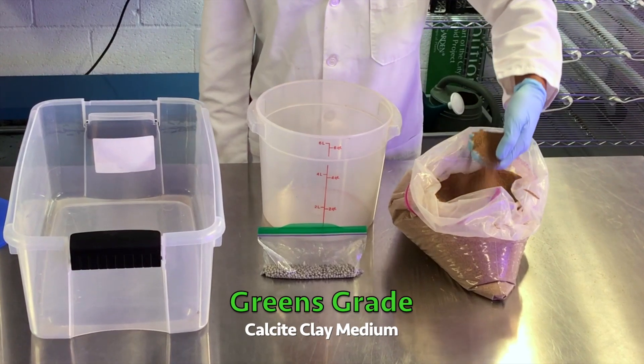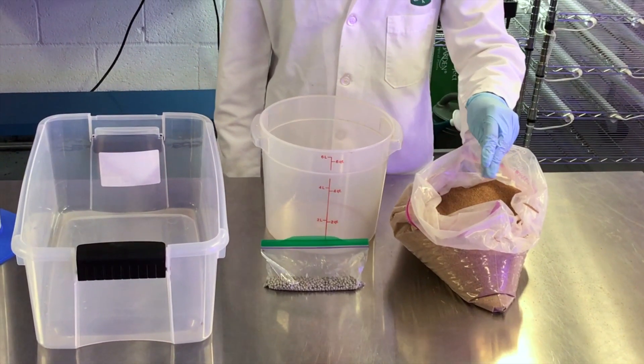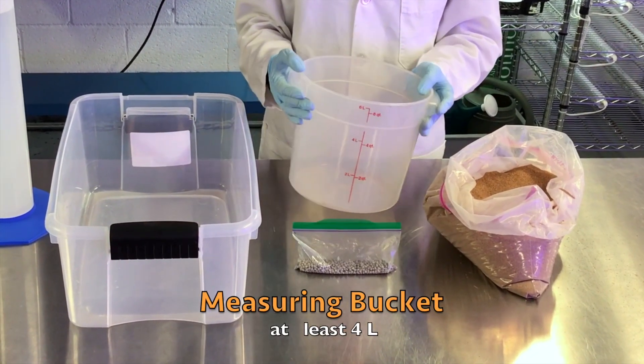You will need Greens Grade medium, a calcite clay media that allows for better water transport and has a sand-like texture, and a measuring bucket which you will use to measure your medium.